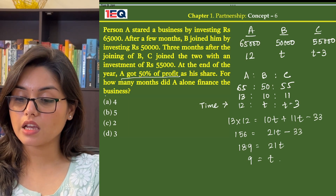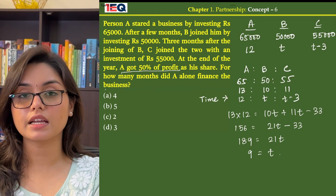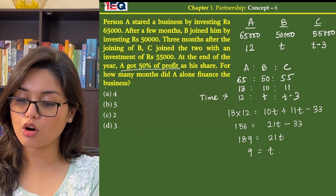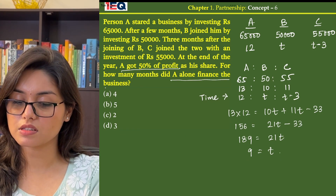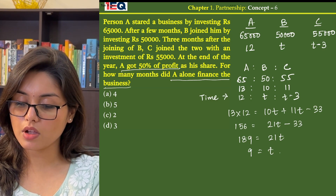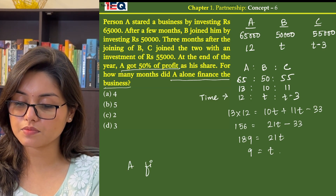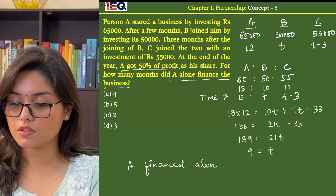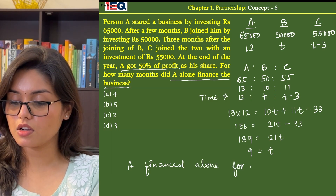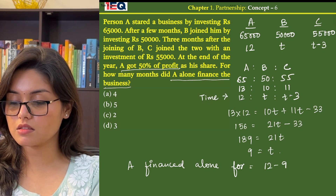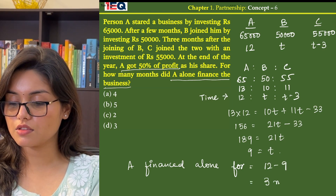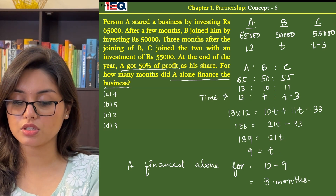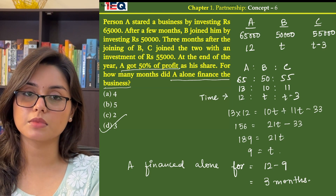Now, if B invested for 9 months, we have to find how long A financed the business alone. A financed alone for 12 minus 9, that is 3 months. So, the answer to this question is option D, that is 3 months.